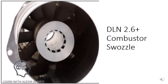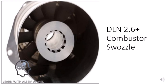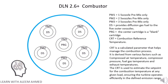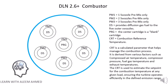The swazzle is the combination of swirl and nozzle, where fuel and air mixture is supplied for effective combustion. PM1 has one swazzle which is premix only. PM2 has two swazzles which are premix only. PM3 has three swazzles which are premix only. D5 provides diffusion gas fuel to the five outer swazzles. The center cartridge in PM1 is a blank cartridge which is not used in gas-fired turbines; for diesel-fired gas turbines this blank cartridge is replaced with a water injection nozzle.